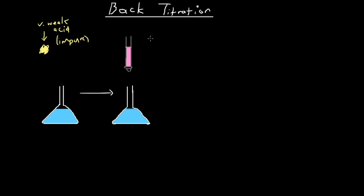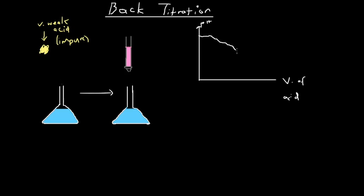I could make this weak acid into a solution and titrate it with a strong base as we would have done with regular titration. However, if I'm going to do that, the pH curve is going to look a little something like this. The pH curve sort of gradually decreases as the solution becomes more acidic, however it doesn't really have any sharp point at which it decreases.